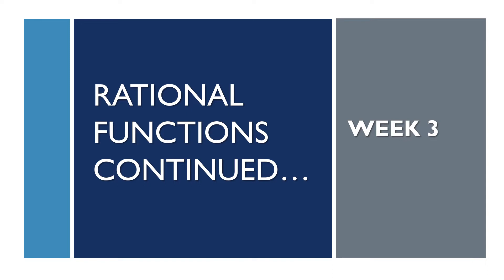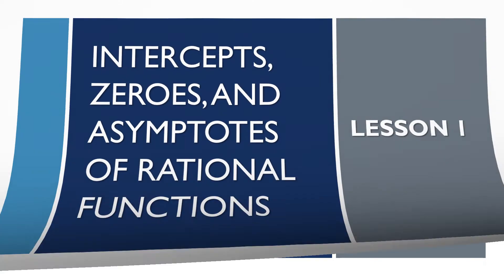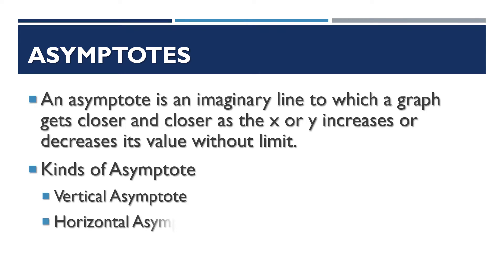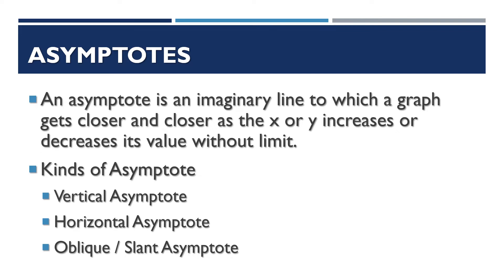So, rational functions. We have now the asymptotes. An asymptote is an imaginary line to which a graph gets closer and closer as the x or y increases or decreases its value without limit. There are three kinds of asymptotes: the vertical asymptote, the horizontal asymptote, and the oblique or slant asymptote. The asymptote is the line wherein the graph gets closer and closer but does not touch.